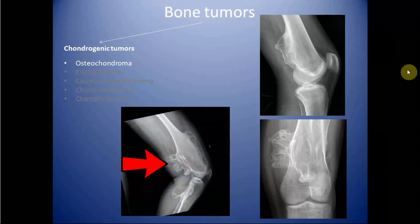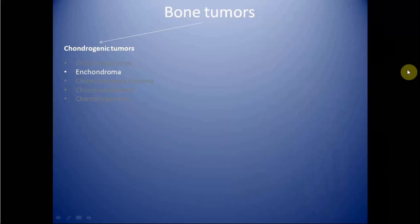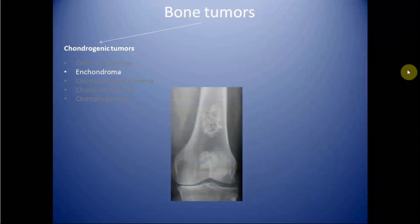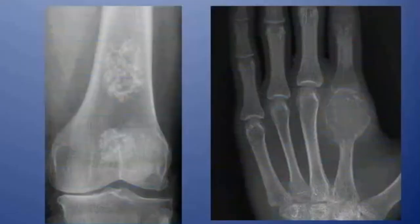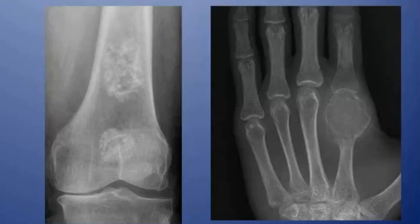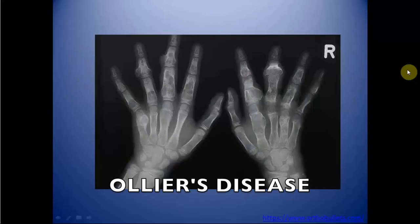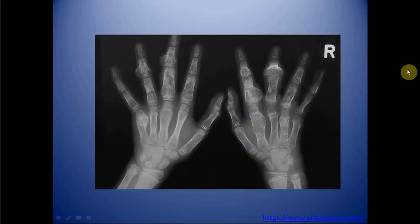A condition in which multiple osteochondromas are seen is known as diaphyseal aclasis. Next is enchondroma, which is a benign cartilaginous tumor most commonly seen in the medullary cavity of long bones and the short bones of the hand and foot. These tumors are characterized by osteolytic foci with internal cartilaginous mineralization. They are seen in all age groups. Differential diagnosis includes bone infarct and low-grade chondrosarcoma. Multiple enchondromas are seen in a condition known as Ollier disease.